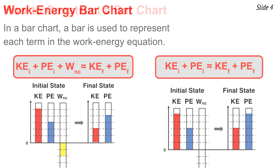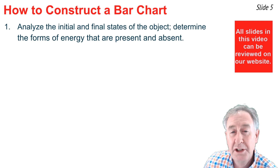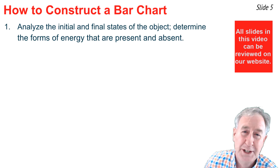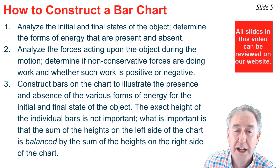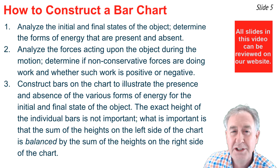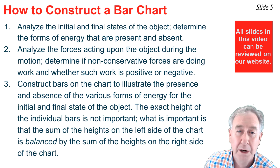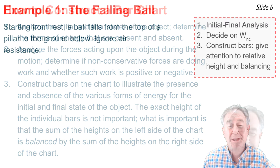How do you construct work-energy bar charts? The process begins by analyzing the initial and final state of the object to determine the presence or absence of the two forms of mechanical energy. The second step is to consider the forces acting upon the system and determine whether any work is done by non-conservative forces, and whether that work is positive or negative. Finally, construct bars to represent these forms of energy. The exact heights are not important — what matters is that the sum of bar heights on the left equals the sum on the right.